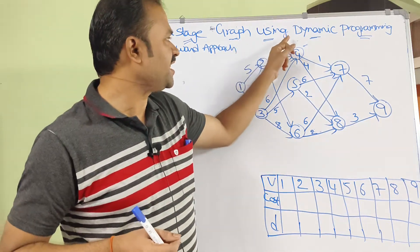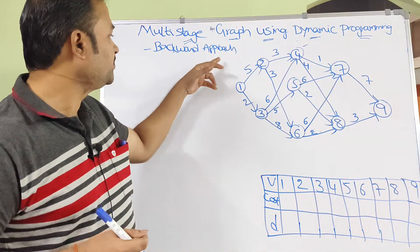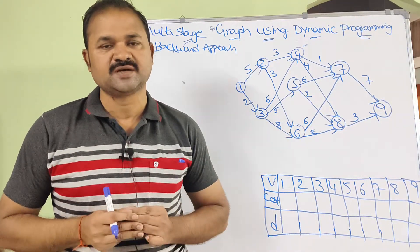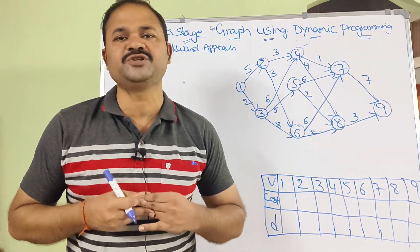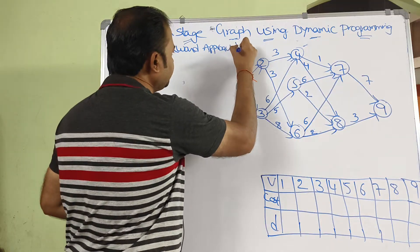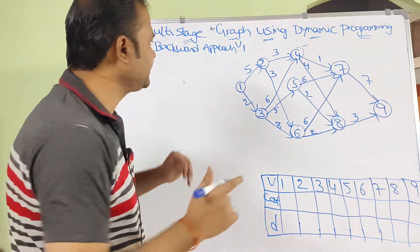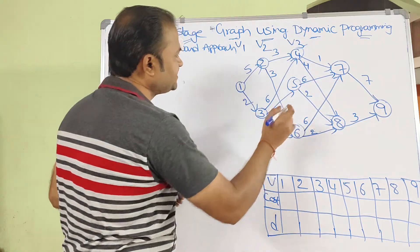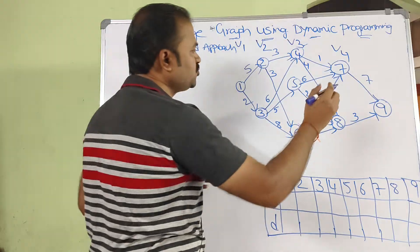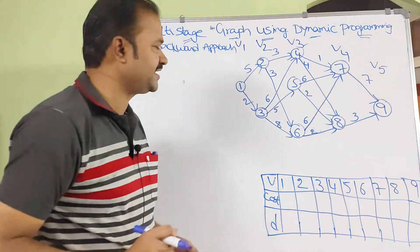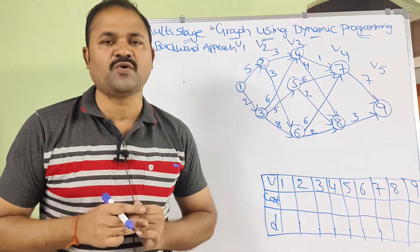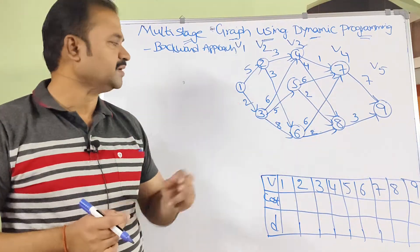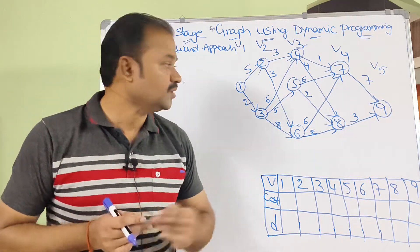Let us discuss multi-stage graph using dynamic programming with the help of the backward approach. A multi-stage graph means the given graph is divided into multiple stages — vertices are divided into stages V1, V2, V3, V4, and V5. V1 contains only vertex 1, V2 contains two vertices, V3 contains three vertices, V4 contains two vertices, and V5 contains only one vertex. The major objective is to find the minimum path from source (vertex 1) to destination (vertex 9).